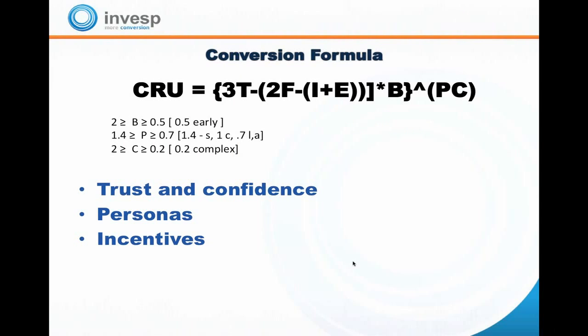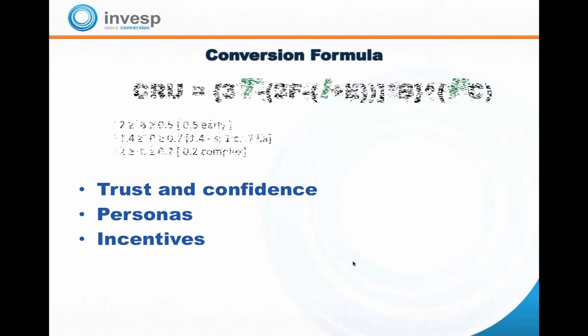The next topic is what factors in the conversion framework actually impact the main homepage. Our conversion rate uplift formula says the main factors impacting conversion are three T — trust — minus two F, which is FUDs: fears, uncertainties, and doubts. FUDs are dealt with through incentives and engagement, and all of this is impacted by the buying stage, persona, and complexity of the sale. For the main homepage specifically, the three most impactful factors are trust and confidence, personas, and incentives.